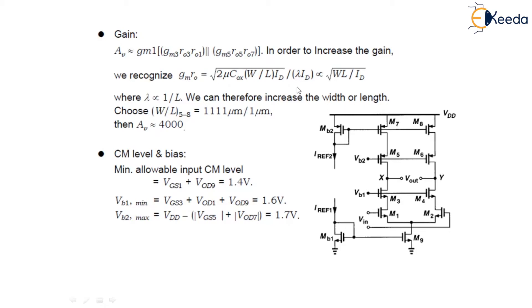We can therefore increase the width or length and therefore increasing the width and length and therefore decreasing the drain current. We can choose W by L for transistor 5 to 8 as 1111 micrometers upon 1 micrometer and the gain will become equals to 4000.